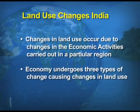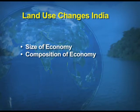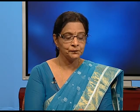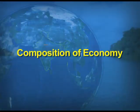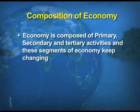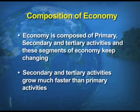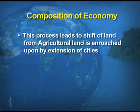Land use changes due to changes in economic activities. When we say economic activities, it may relate to the size of economy, the composition of economy, and the pressure of agriculture on land. The size of economy is measured in terms of the value of goods and services that grow over time, caused by increase in population, improvement in income levels, or advancement of technology. The composition of economy involves primary, secondary, and tertiary activities. Secondary and tertiary activities grow much faster than primary activities, and this leads to the shift of land from agricultural to non-agricultural use.